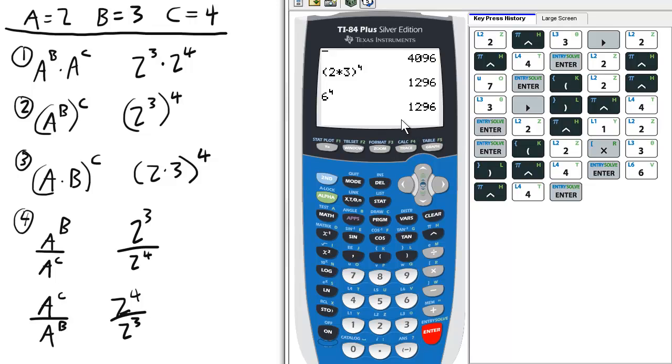So in this case, we know we need to raise everything in parentheses to that power, not just the 3, not just the 2.